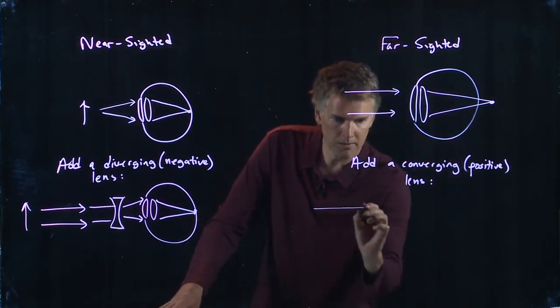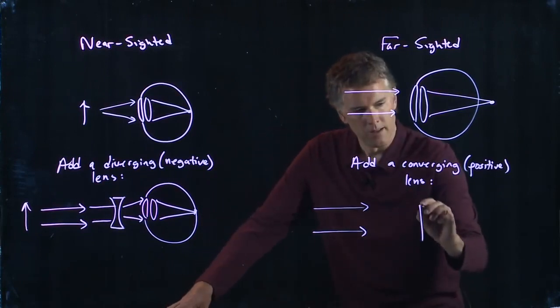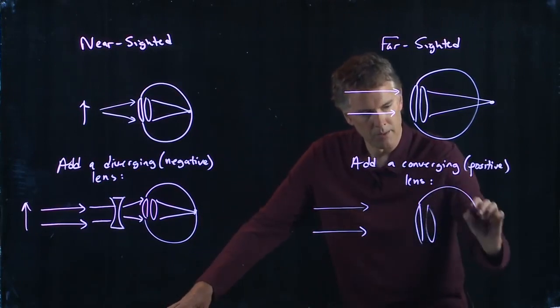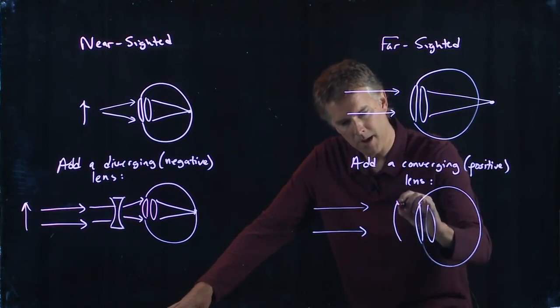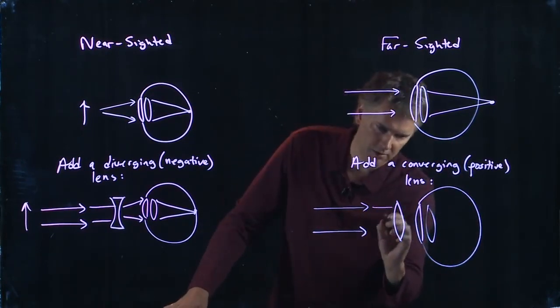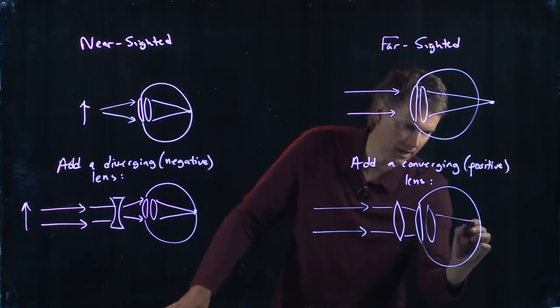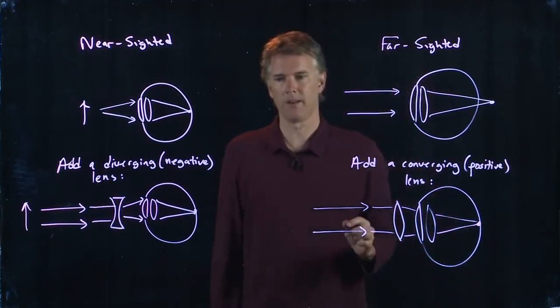And so parallel rays that come in, we want them to focus on the retina. And so we add a positive lens right there. And that starts to get these rays to bend in a little bit. And now they can come to a focus right on the retina.